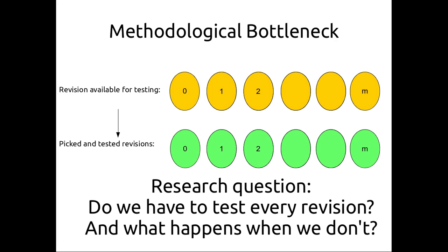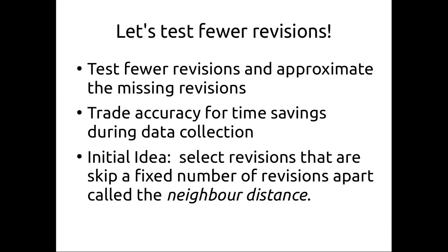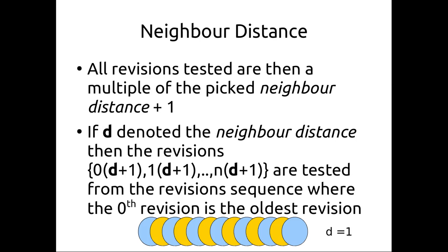Given this methodological bottleneck of having to test every revision, our research question is: do we have to test every single revision, and what happens when we don't? We're going to try testing fewer revisions and approximating the missing ones, trading accuracy for time savings during data collection, while maintaining uniformity across the space by uniformly skipping a set number of revisions — which we call neighbor distance.